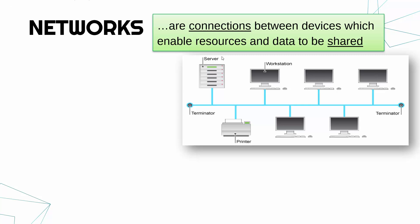We've got five computers — five workstations, one server, which is a computer, and one printer. The blue lines are our connections between them. They could be wires, or they could also be a wireless connection.